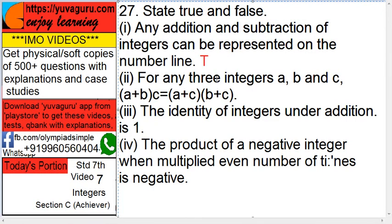For any three integers a, b, c, a plus b into c equals to a plus c into b plus c. That is true.